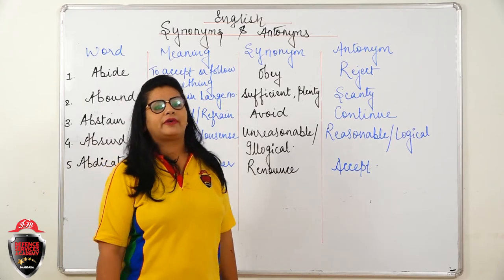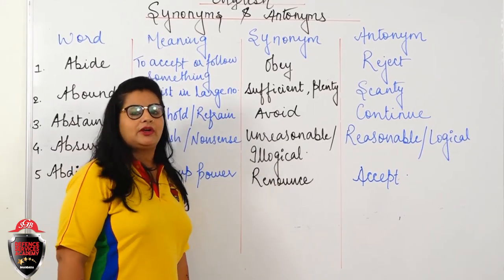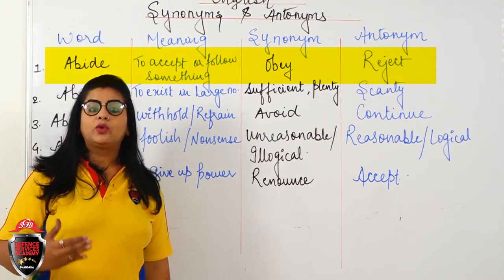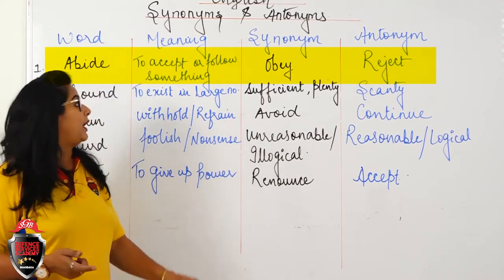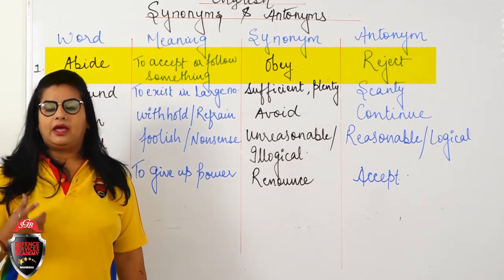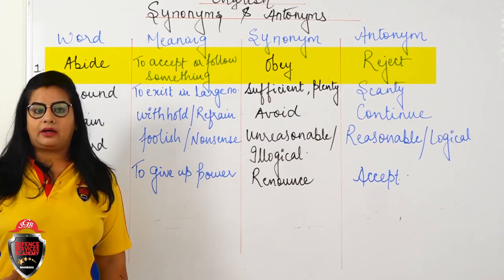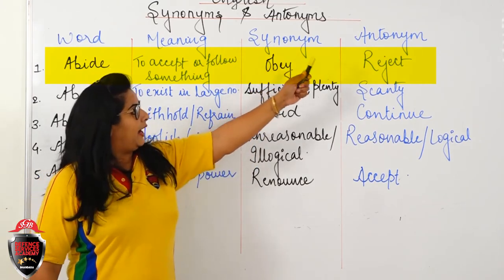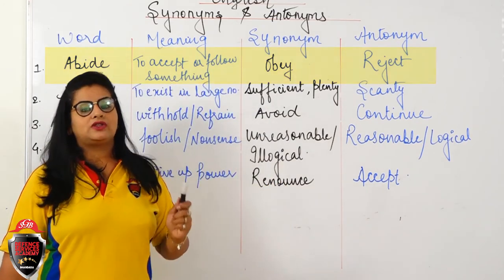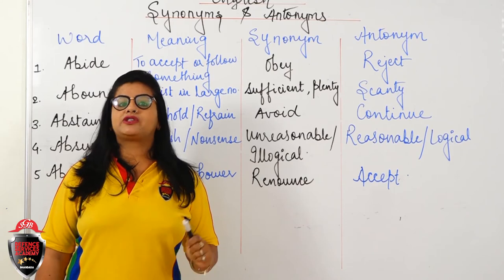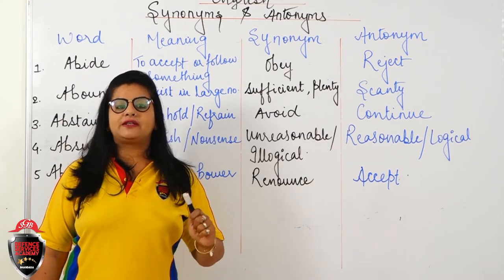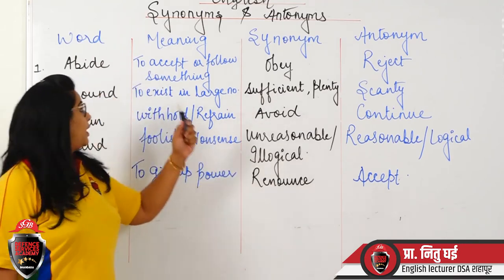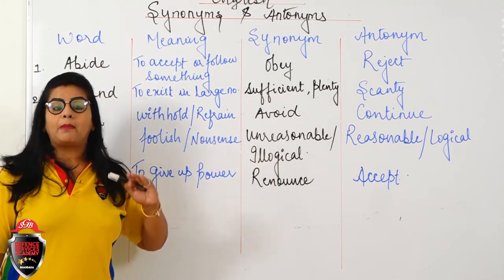Today's segment of synonyms starts with the first word: Abide. You must have heard this word in school — in rules like 'abide by the rules.' Abide means to follow or accept something — kisi cheez ko maan na aur follow karna. Synonym: Obey. Antonym: Reject. Usage: 'Always abide by the rules.' 'I always abide by my parents' orders' — Main apne parents ki orders ko hamesha follow karta hoon.